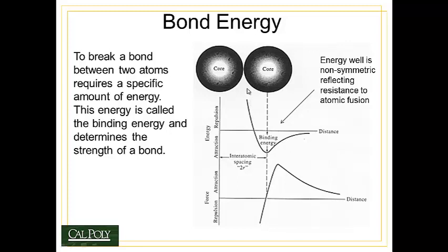Notice that the energy well is non-symmetric. This is related to the resistance to atomic fusion. You may have heard of nuclear fission as the way that we produce nuclear energy. Nuclear fusion is the way the sun combines the cores of two atoms to create higher-order atoms. There's a strong force that resists that nuclear fusion, and that's why the repulsive force goes up so dramatically as you try to push the atoms together.